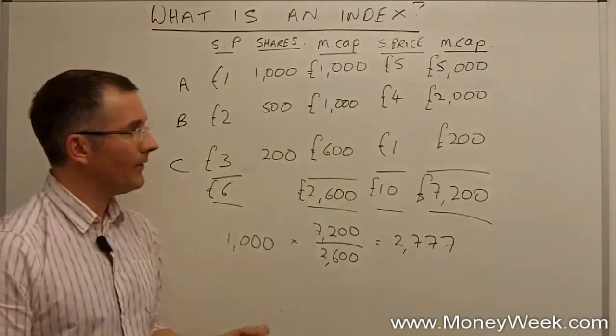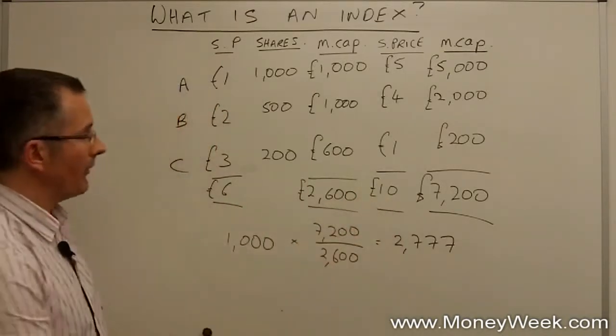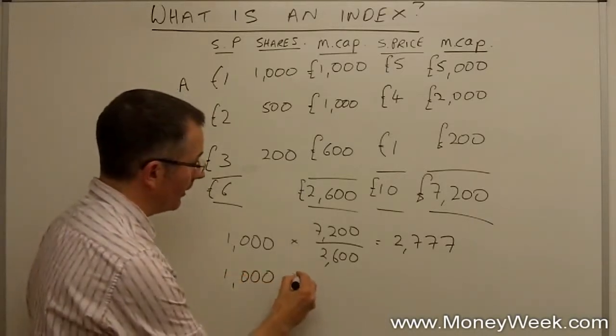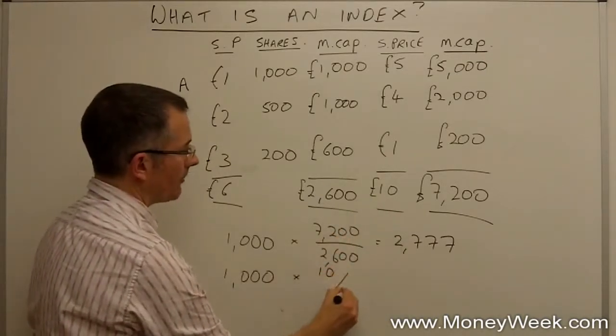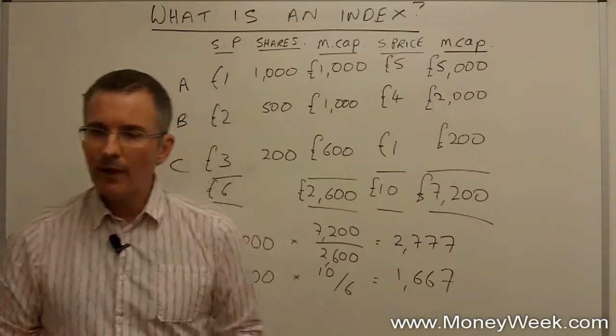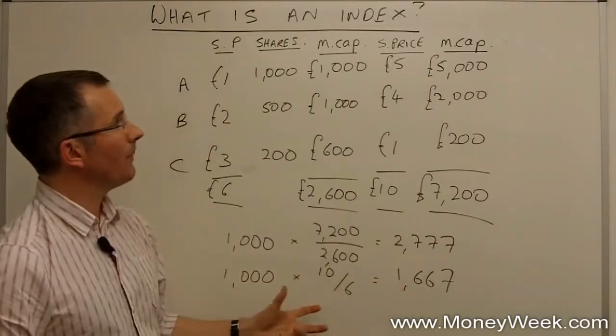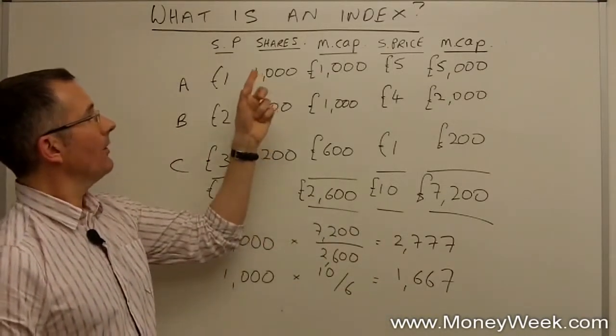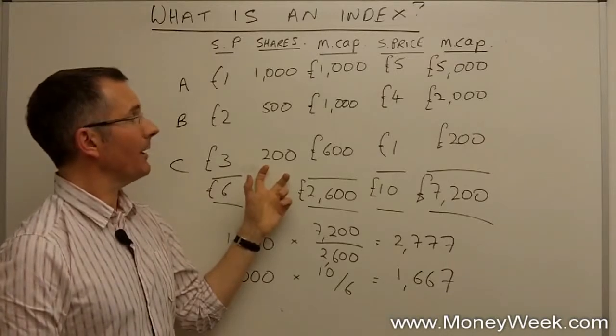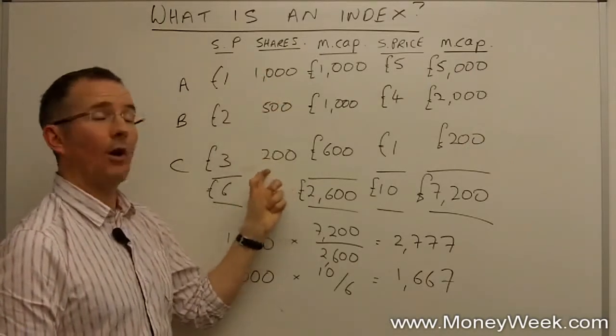Using market capitalization, the index has almost trebled over the year. But is there another way? What if I take the Dow Jones approach in the US and just do it on share prices? That gives me more like 1,667. You can see using share prices the index has gone up but not as far as using market capitalizations. That's got a lot to do with the fact that the companies are different sizes.